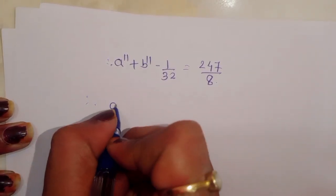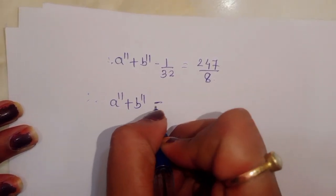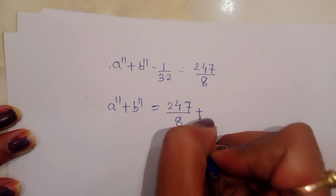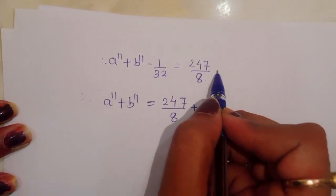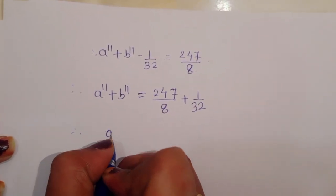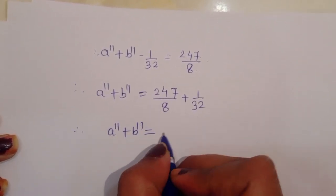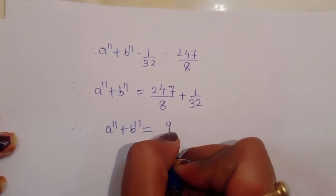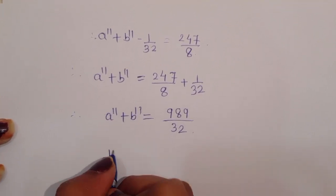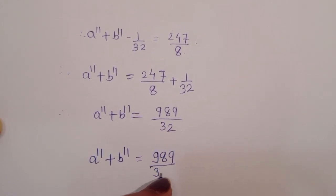Therefore: a power 11 plus b power 11 is equal to 247 upon 8 plus 1 upon 32. Taking LCM and solving, we get a power 11 plus b power 11 is equal to 989 upon 32.